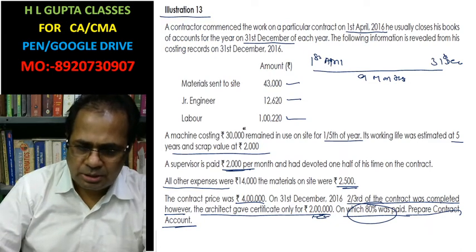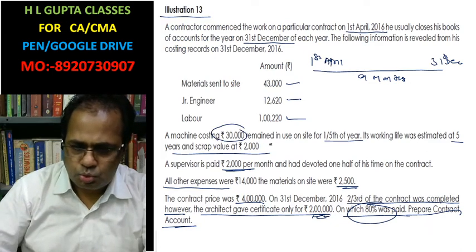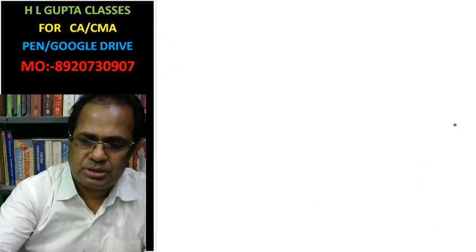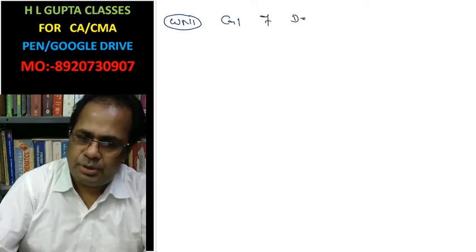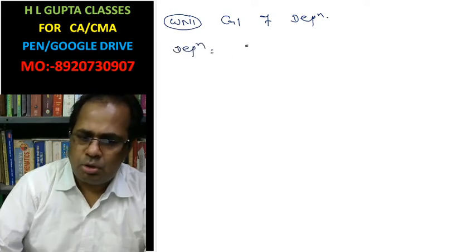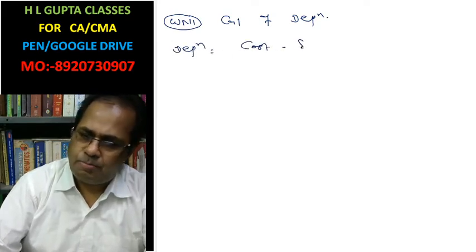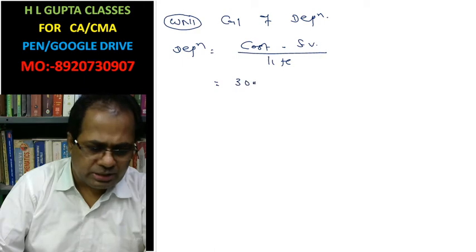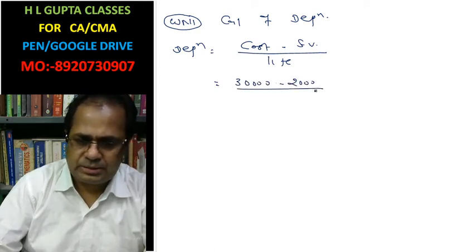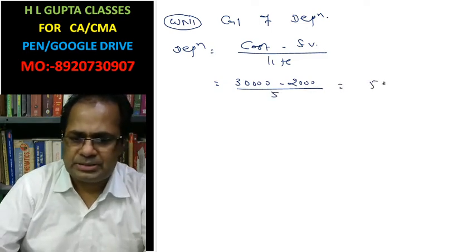How do we calculate depreciation? The machine cost is Rs. 30,000, scrap value is Rs. 2,000. Working Note 1 — Calculation of Depreciation: Depreciation equals cost minus scrap value divided by life. Cost is Rs. 30,000, scrap value is Rs. 2,000, life is 5 years. Annual depreciation = Rs. 5,600.